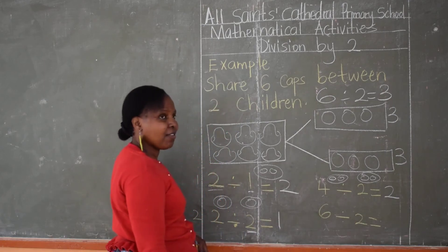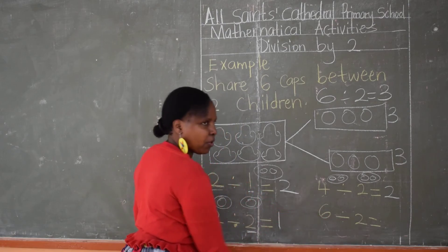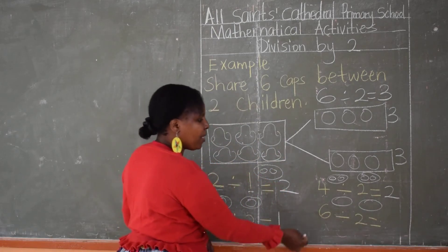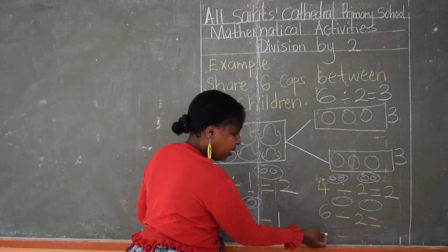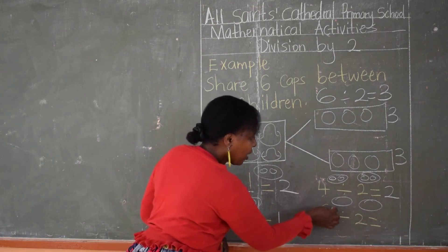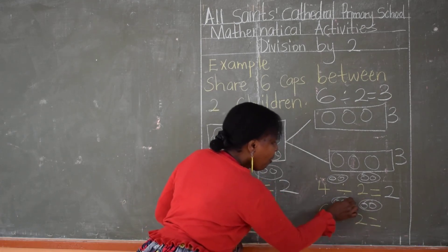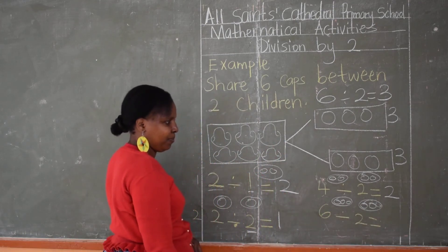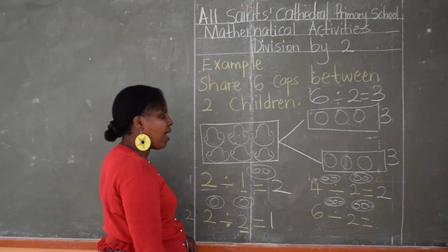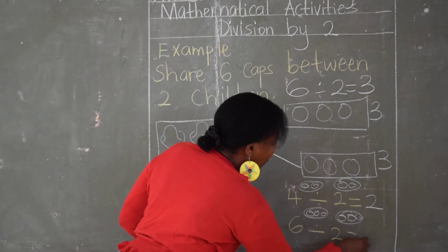Six divided by two. How many groups are we going to create? Two — one, two. And we are going to share how many books? Six. So we count up to six and share among the two groups. One, two, three, four, five, six. So what is our answer? Six divided by two — each one will get how many? Three. Very good, children.